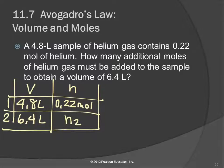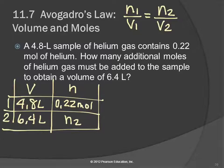We can solve for N2 using Avogadro's law. The equation is N1 over V1 equals N2 over V2. This time we're solving for N2.